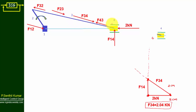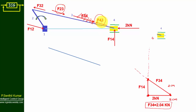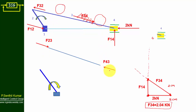Now we move from link 4 to link 3 — the connecting rod. For the connecting rod FBD, the number 3 should appear second in the force notation. Move the forces to the connecting rod. We already know F34 equals 2.04 kilo Newton, so F43 is opposite to F34, giving minus 2.04 kilo Newton. Then F23 is opposite to F43, so F23 equals plus 2.04 kilo Newton.